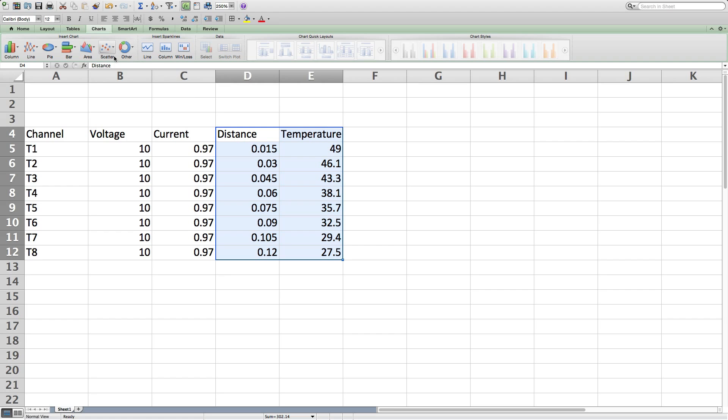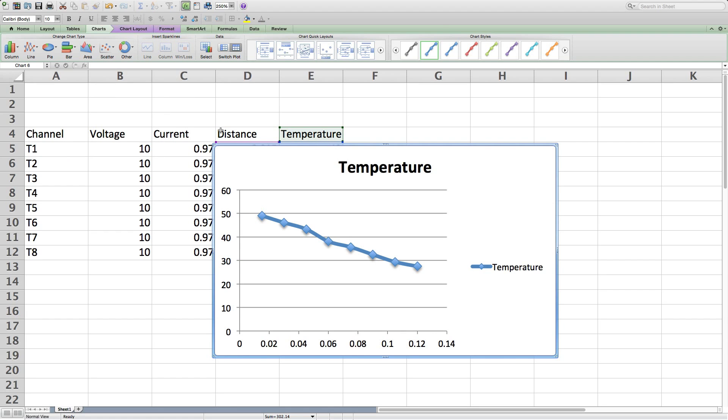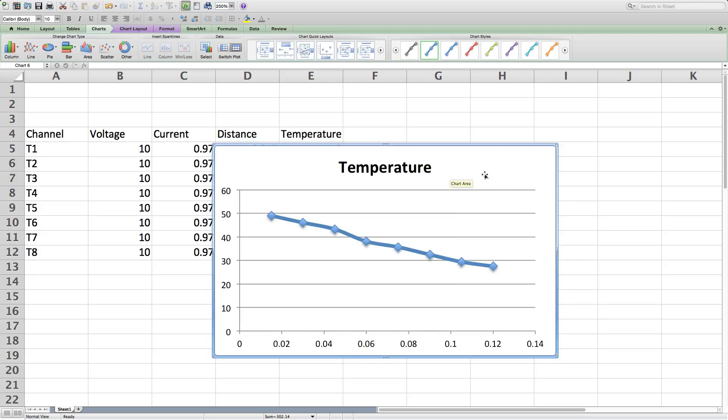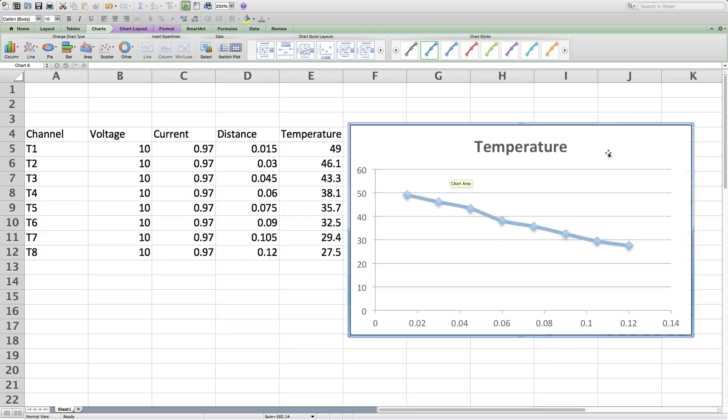So I highlight those two, go to scatter, smooth scattered plot, and now I have my graph. Now, what this is telling us is that there is a clear linear relationship between the temperature and the distance. You go away 0.015 meters and it seems to be dropping at about three degrees each time. And that seems to be pretty constant.